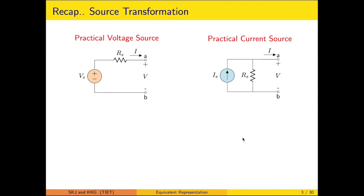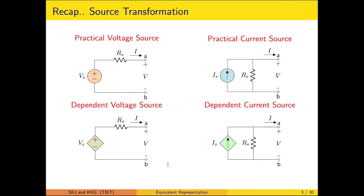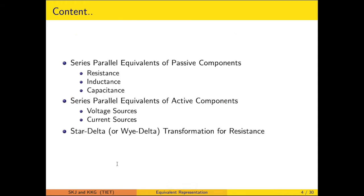This equivalence is also applicable when there are dependent sources — the same logic is used to transform a dependent voltage source to a dependent current source equivalent. This lecture will cover: series-parallel combinations of passive components, series-parallel equivalents of active components, and the star-delta (Y-delta) transformation for resistance, supported by numerical examples.